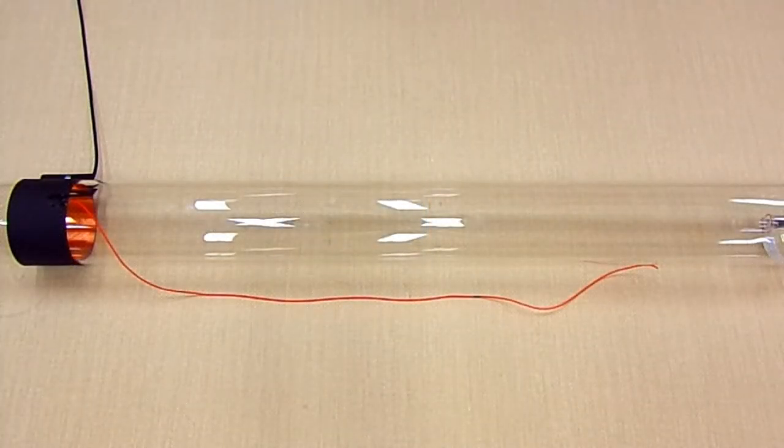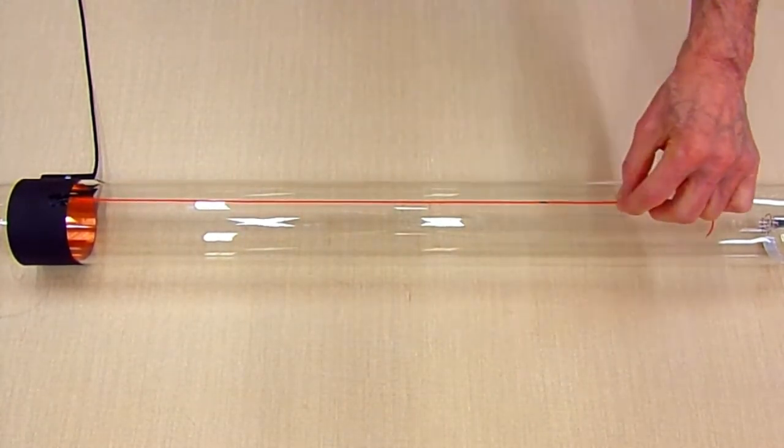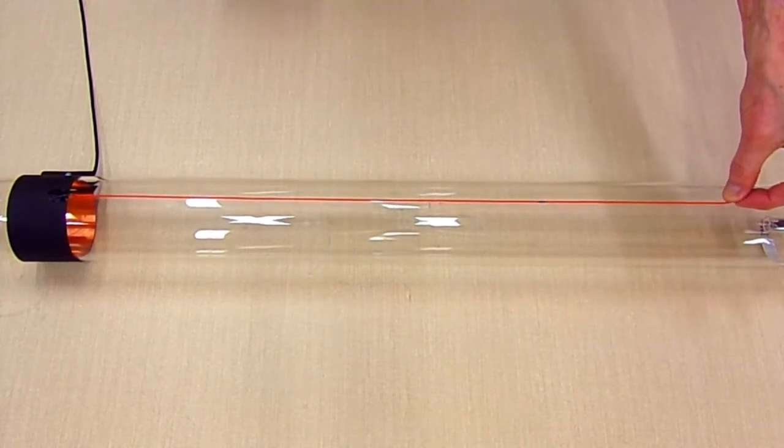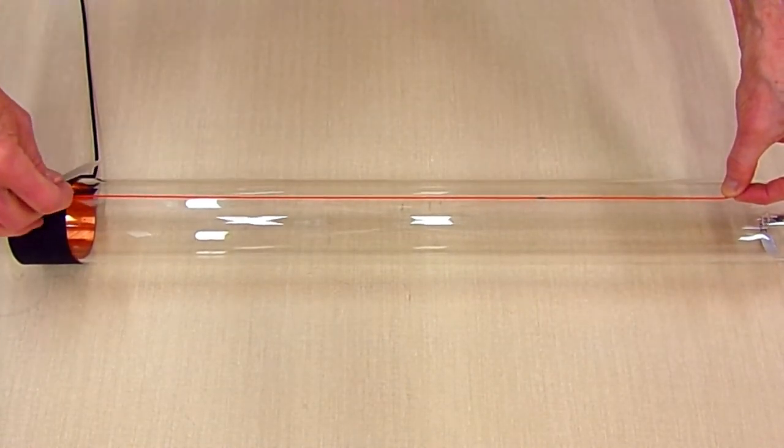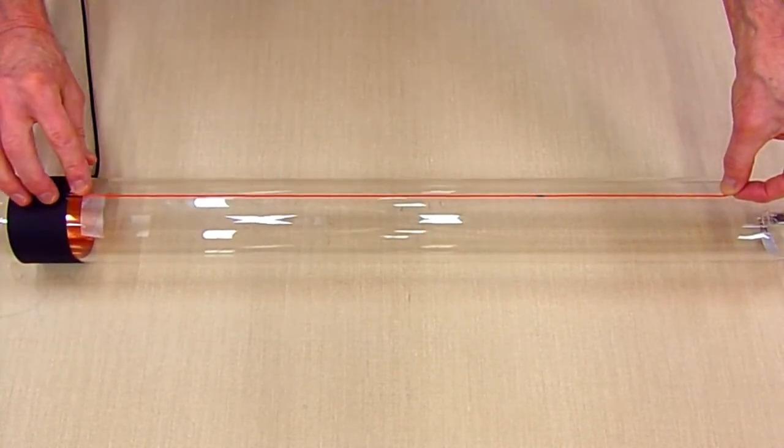Now we will fasten the side wire to the plasma tube. Begin by stretching the wire straight along the side of the tube. Place a short length of transparent tape over the side wire about 3 cm away from the electrode. Press the tape firmly in place to fix the side wire to the tube.